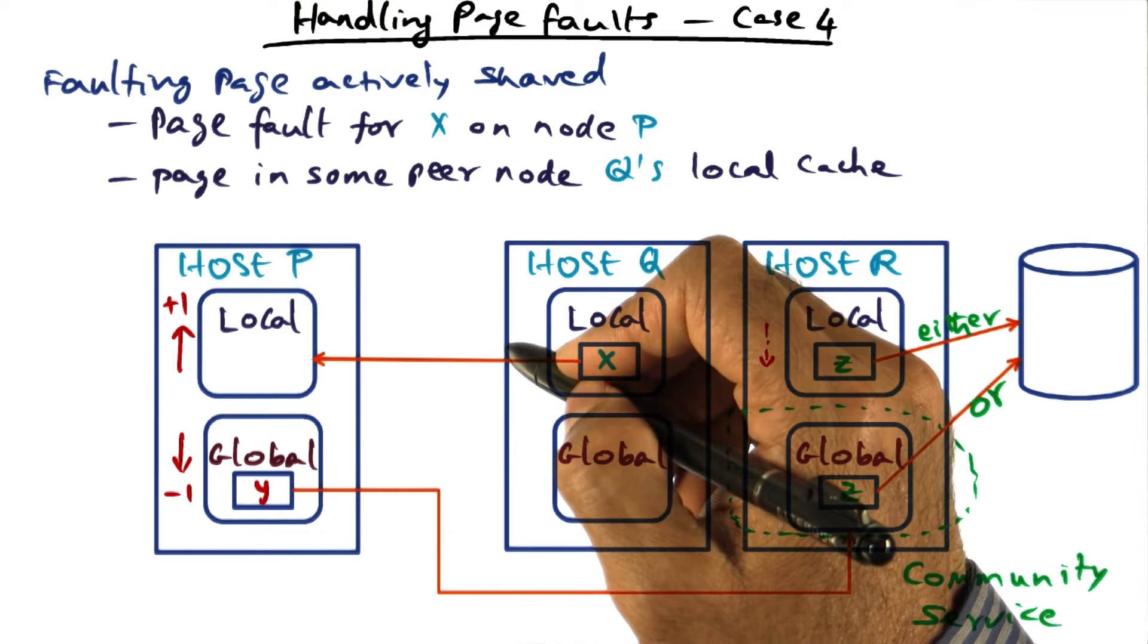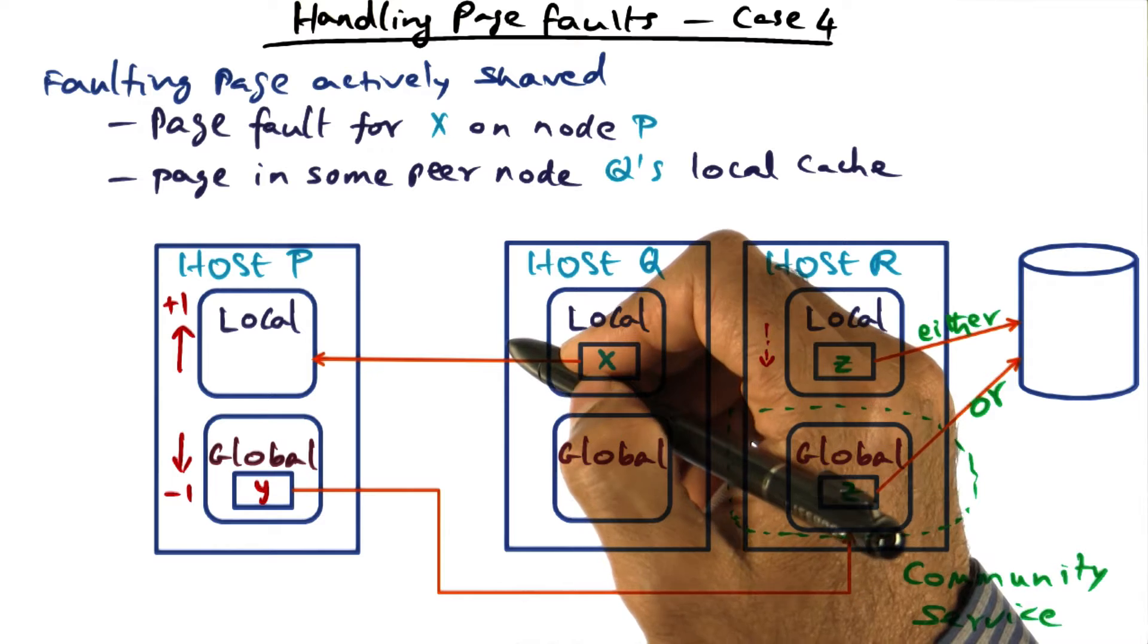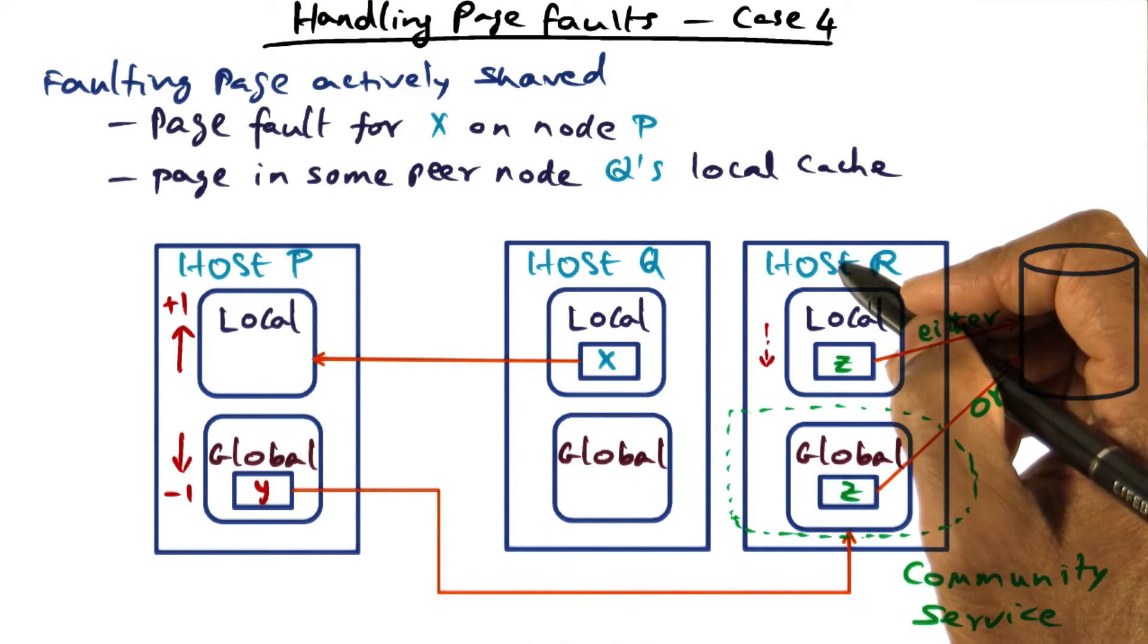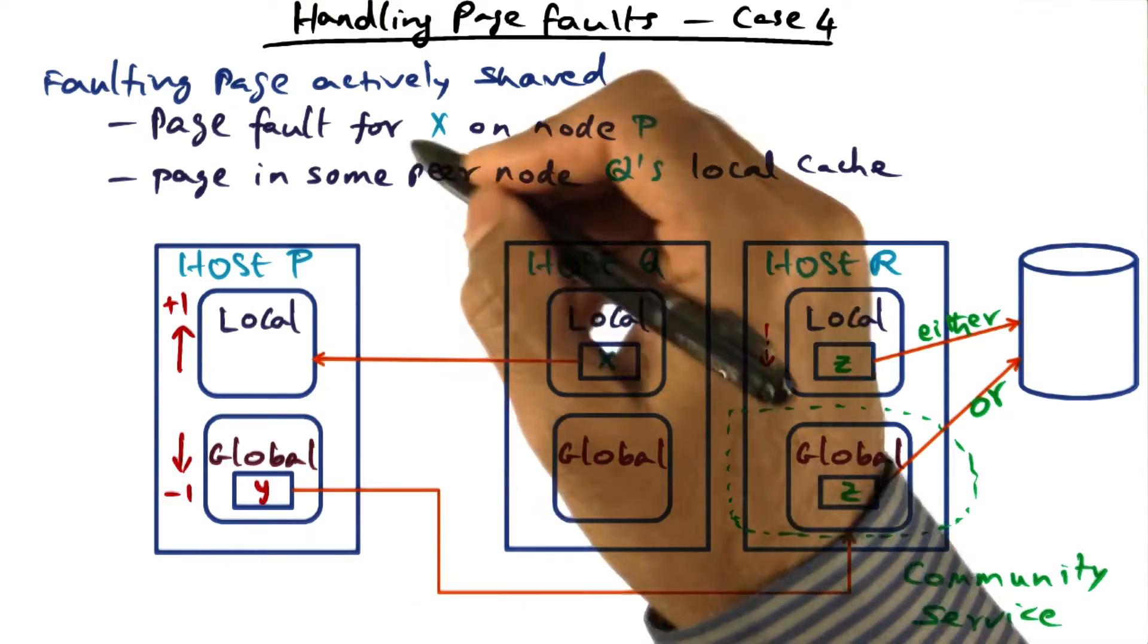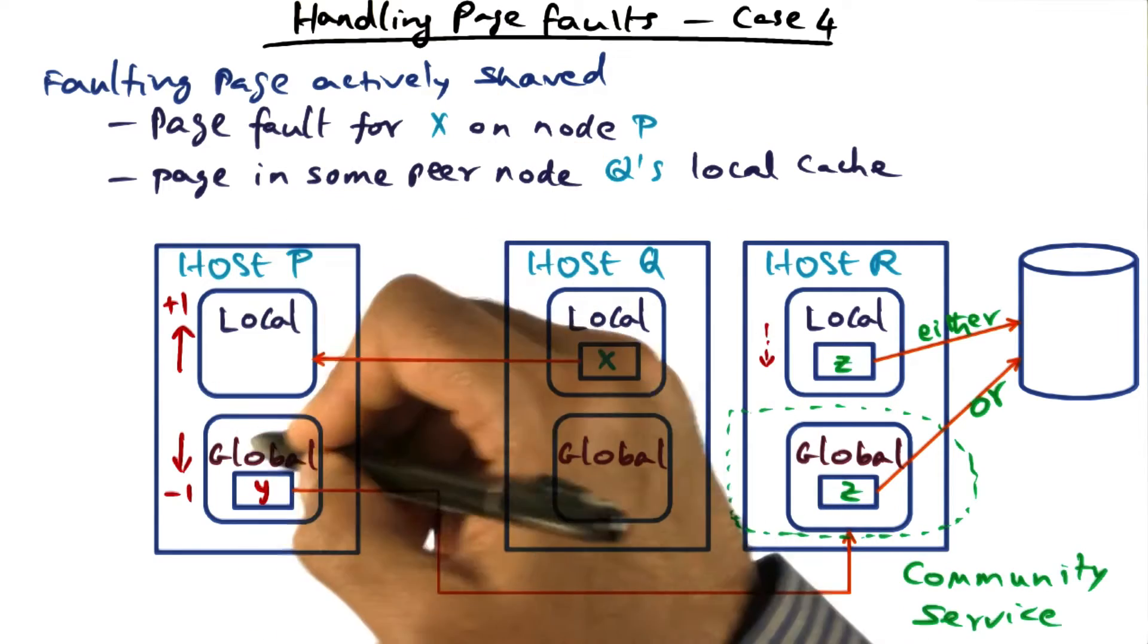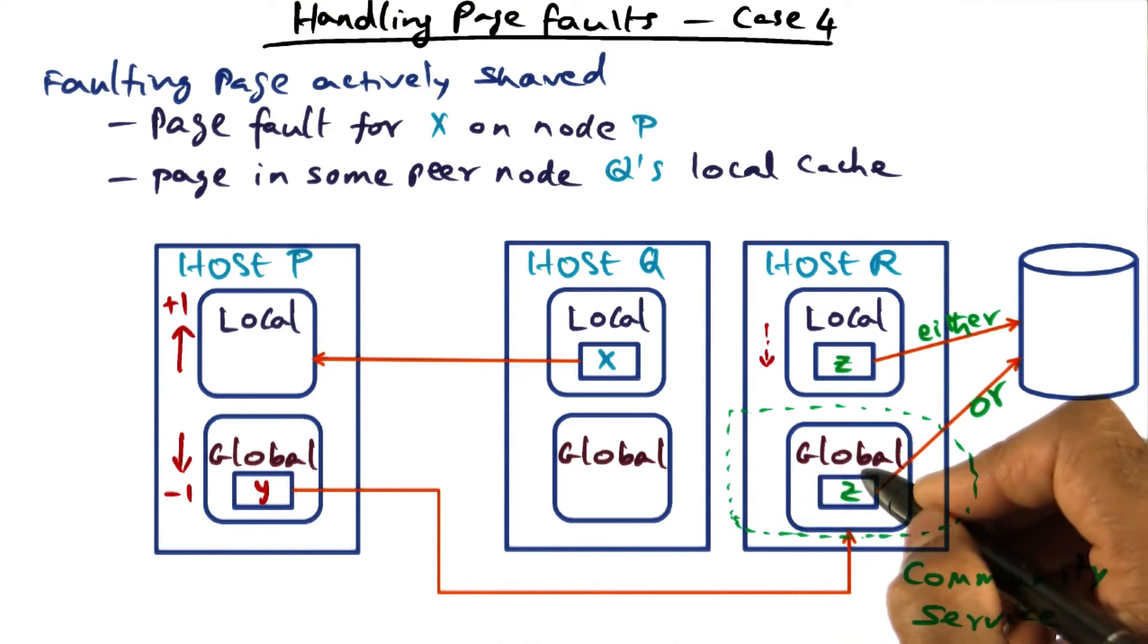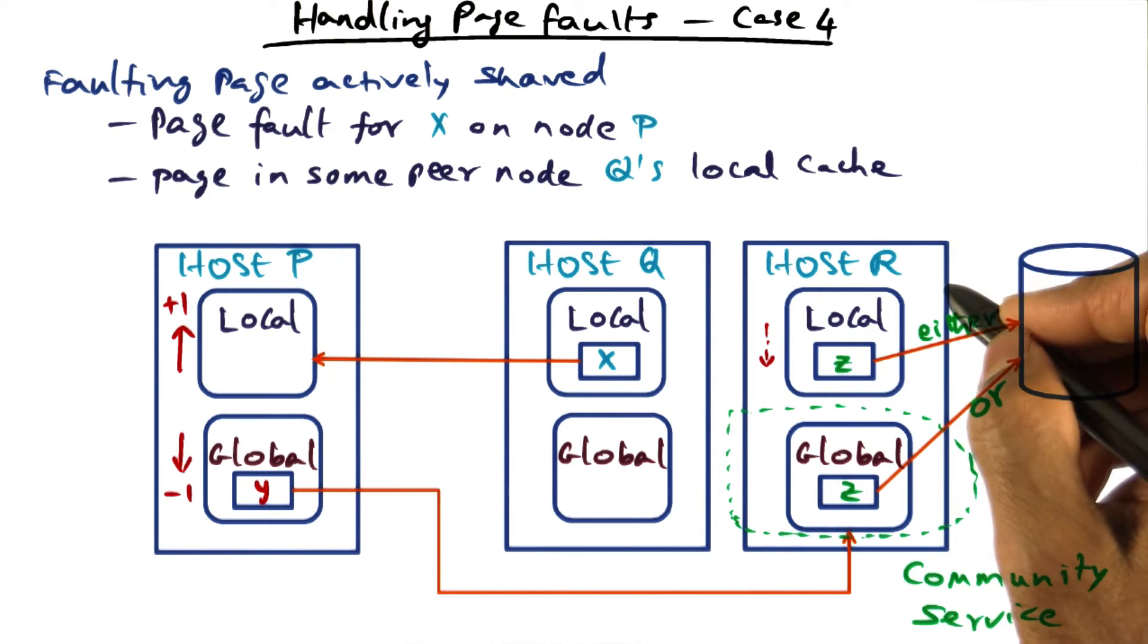And if that is the case, then I have to necessarily pick a page from the entire cluster and throw it out onto the disk. And that's what we're doing here. What we're saying is that host R happens to have the globally oldest page. And this page that I'm replacing from host P in order to accommodate the missing page and bring it into my local cache on host P is to throw out Y over to host R. And host R, in order to make room for this guy in its global cache, has to necessarily pick a victim from its physical memory.